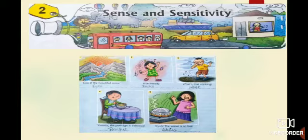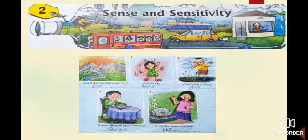As you already know, eyes help us to see, ears help us to hear, nose helps us to smell, tongue helps us to taste, and skin helps us to touch or feel. You can write these sense organs easily. Now let's focus on the contents we are going to cover in this chapter.